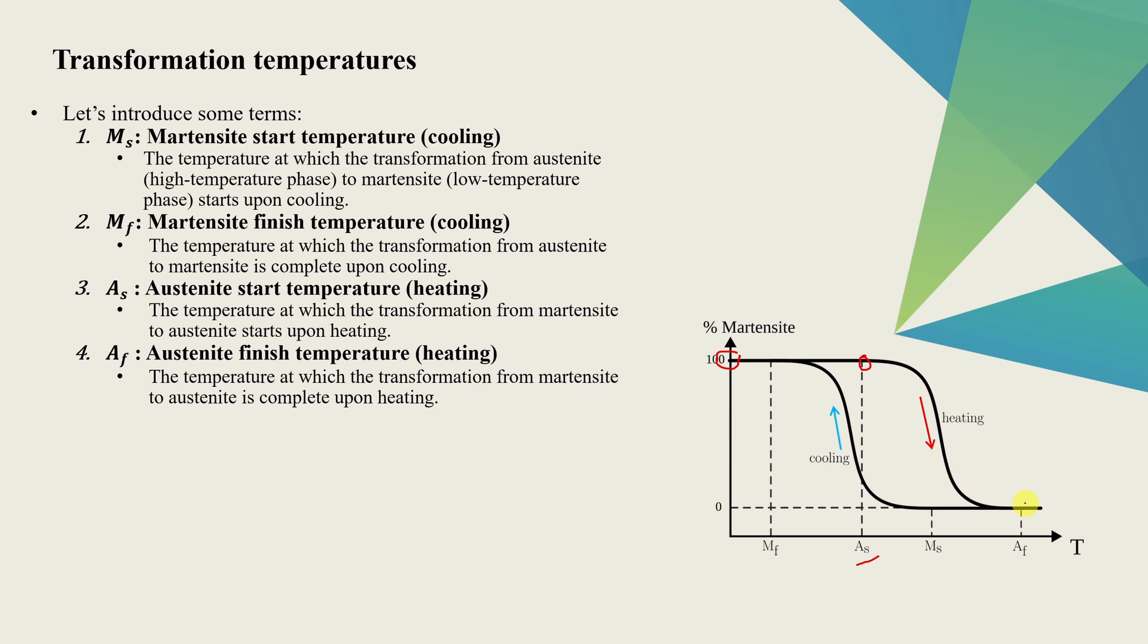And if we keep increasing the temperature, finally we will reach another temperature denoted as Af, where all the martensite will be transformed to austenite. So these two temperatures are known as austenite start temperature and austenite finish temperature. Now our part is heated and we have 100% austenite. If we start to cool that part, we observe some unique phenomena. When we start to cool at Af, austenite doesn't start converting to martensite.